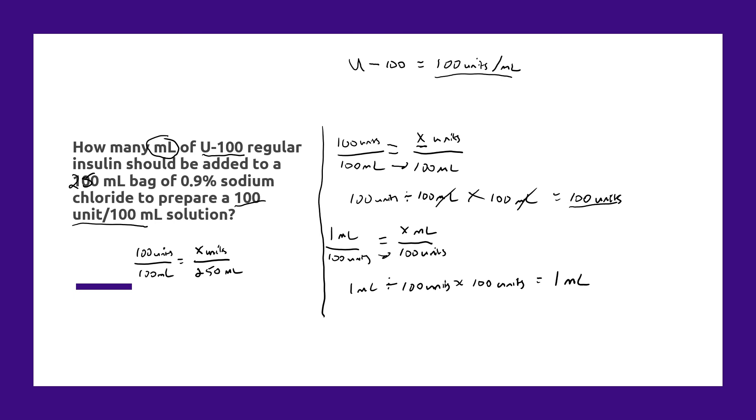Now if we do that cross multiplication, 100 units divided by 100 mL times 250 mL, that X is going to become 250 units.